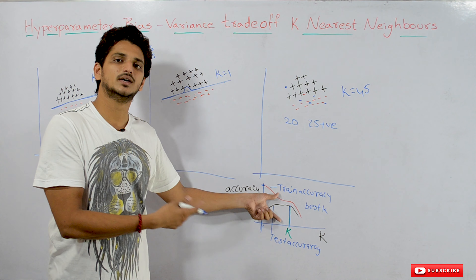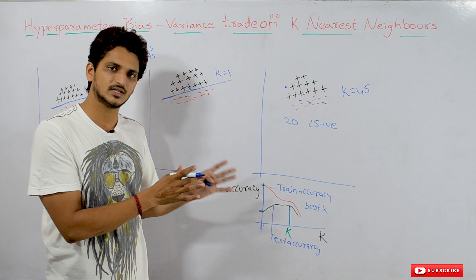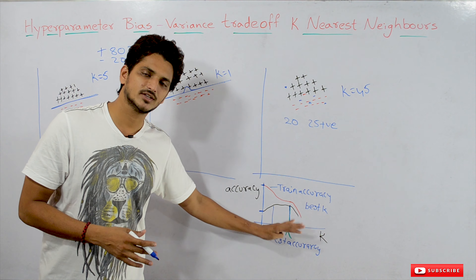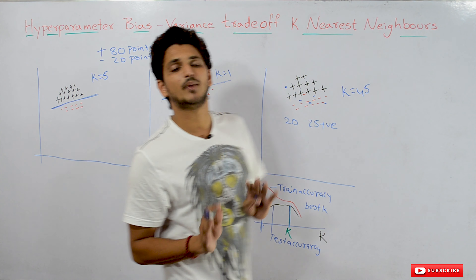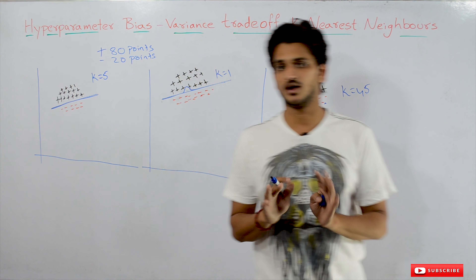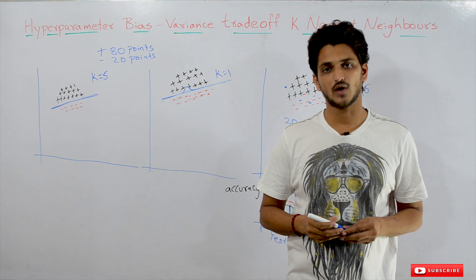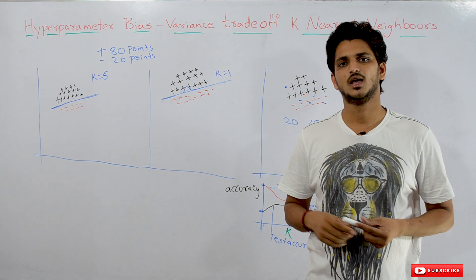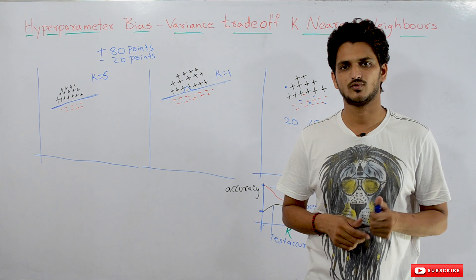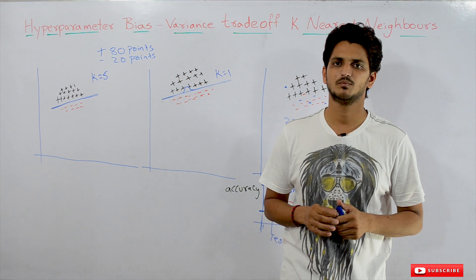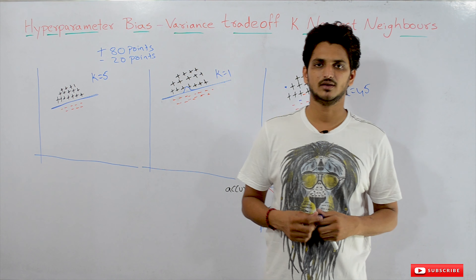We will do this using Grid Search CV. We already did the coding for Naive Bayes, and the same code applies for K-nearest neighbors as well. This is all about bias-variance trade-off in K-nearest neighbors. Hope you understand the concept. If you have any questions, please post them in the comment section below. Thanks for watching. If you haven't subscribed to our channel, please subscribe and press the bell icon for the latest updates. Thank you.